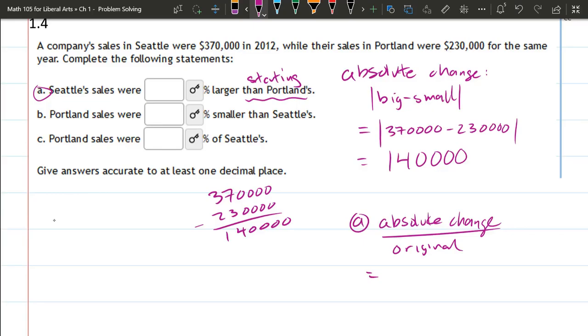So in this case, the original, or the starting value is Portland's. So the change is the number we just computed, and the original Portland was 230,000. All right, so that's part A right there.